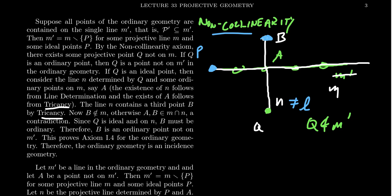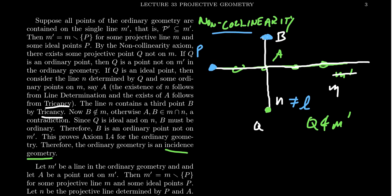We've now shown line determination, tricancy, point existence, and non-collinearity for the ordinary geometry, establishing that it is an incidence geometry. There's one more axiom to verify in order to show it is an affine geometry: the Euclidean parallel postulate.